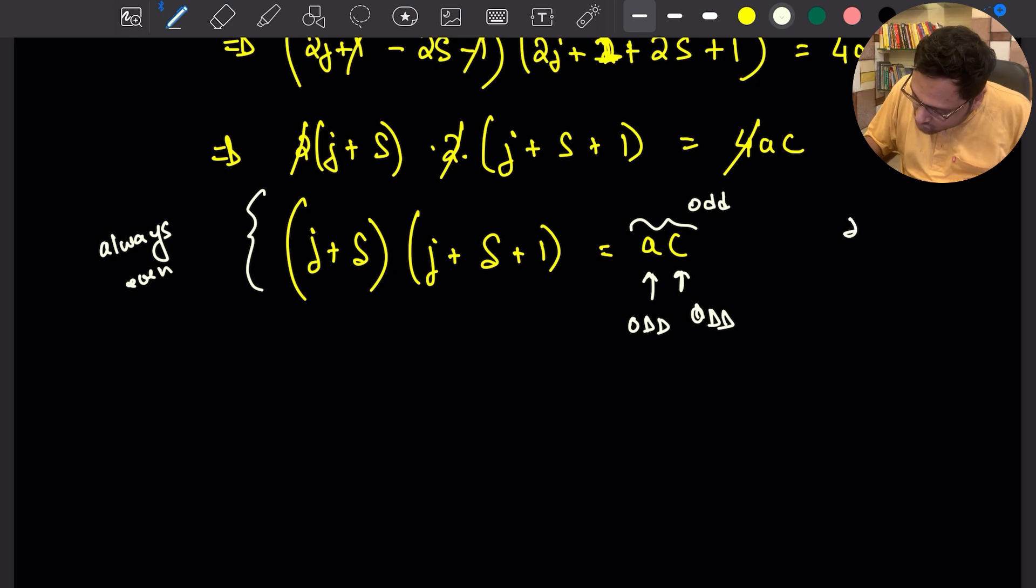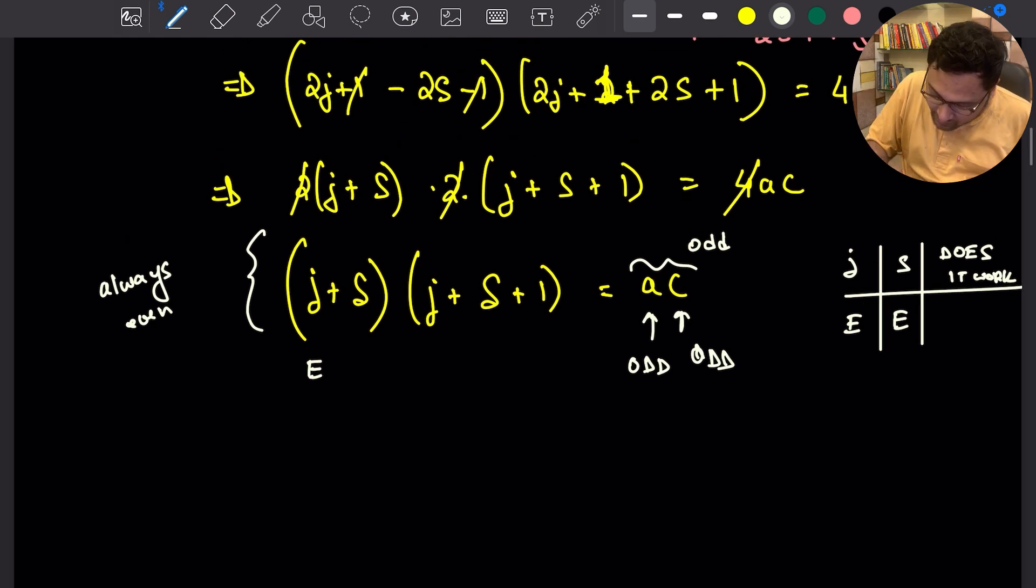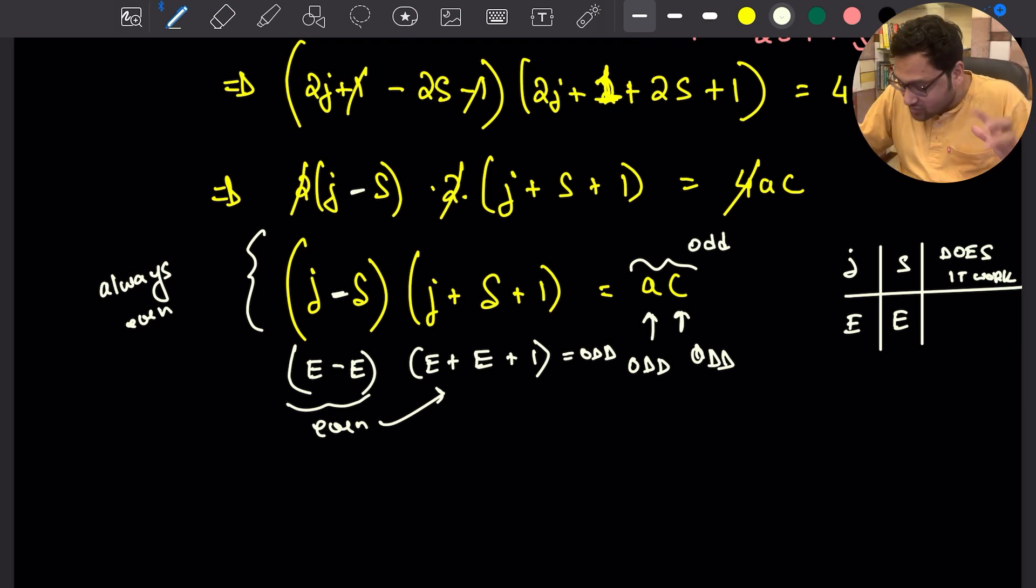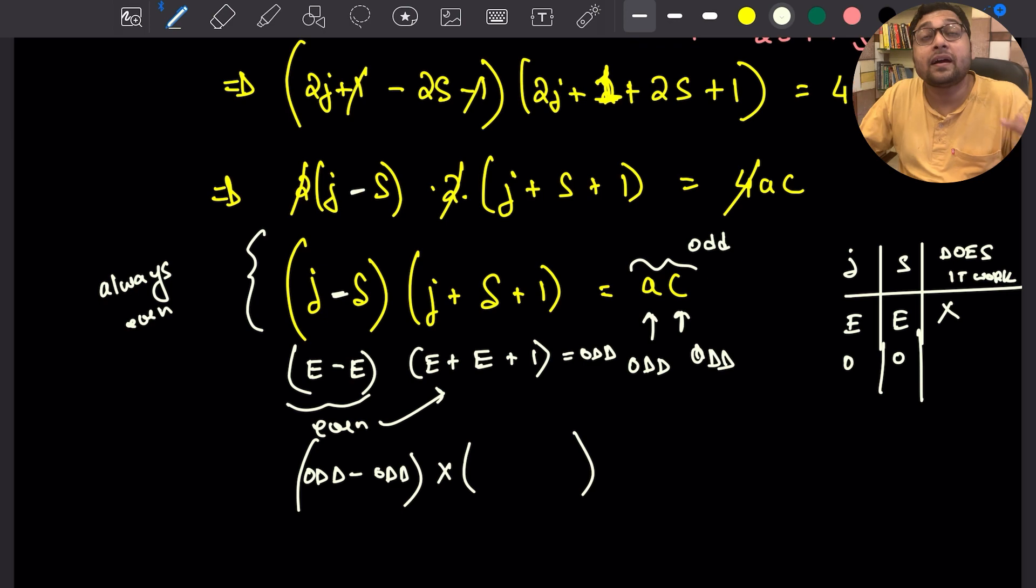So there are several situations. We have to check J, S, and does it work? If J is even, S is even, will it work? So we have even minus even times even plus even plus one is equal to odd. Is that possible? Well, no. Because even minus even is always even. And if you multiply even to anything, it's always even. So it cannot be equal to odd. That's case one. Can it be odd and odd? Odd minus odd times something. Odd minus odd is even. So again, the left-hand side becomes even. It doesn't work. The only other case that we have to check is, well, there are actually two cases. Both of them are very similar. This one is even, this one is odd. This one is odd, this one is even.